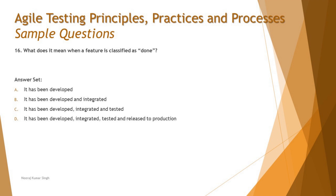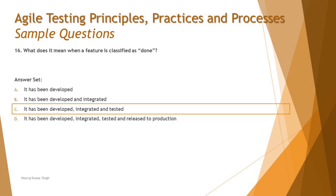Option D says it has been developed, integrated, tested, and released to production — but that's not correct. The 'released to production' part happens once together at the end of a release, not at every single sprint. Done is a status limited to the internal completion of a feature, not its deployment to production. So the right answer is C: it has been developed, integrated, and tested.